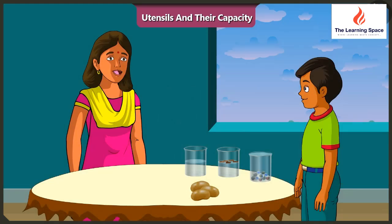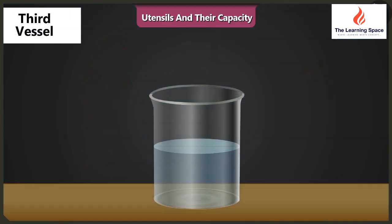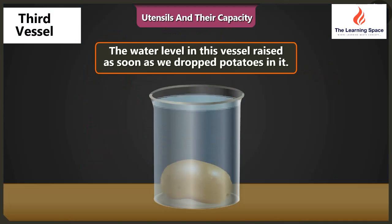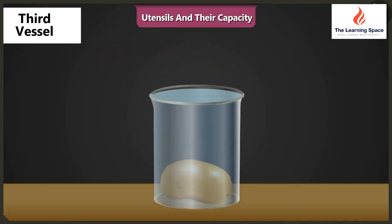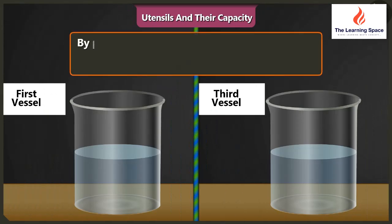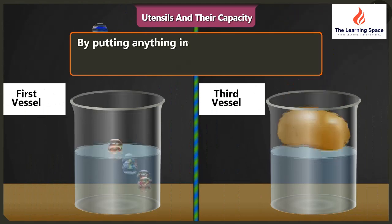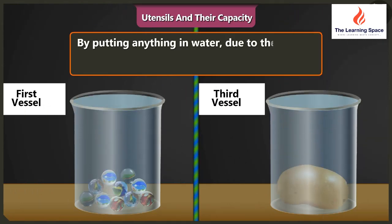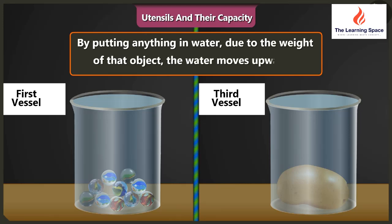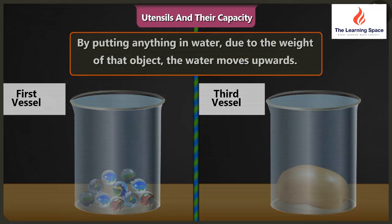Now let's drop these potatoes in the third vessel. Oh wow, the water level in the vessel raised as soon as we dropped potatoes in it. So we saw that when we drop any object in water, due to the weight of that object, the water moves upwards. Yes, I understood.